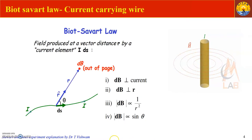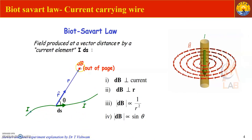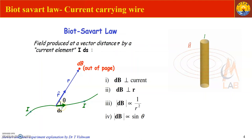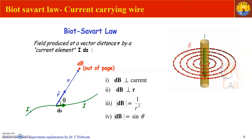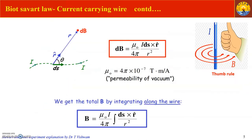By the Biot-Savart law, when current flows in one direction a magnetic field is produced. This magnetic field is out of the page, perpendicular to the current element and to the distance r. dB is inversely proportional to the square of the distance, and proportional to the sine of the angle between the distance and the current element. So the magnetic field can be written as dB = (μ₀/4π) · i·ds·sinθ / r².